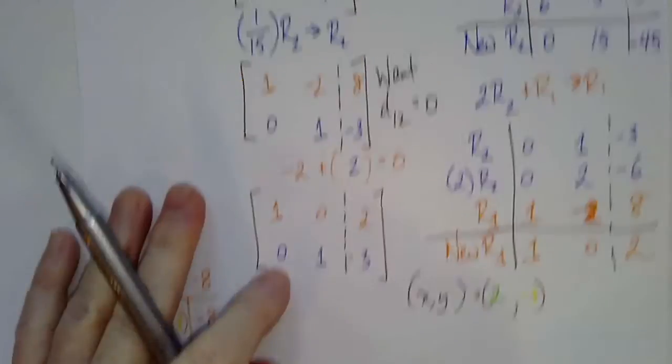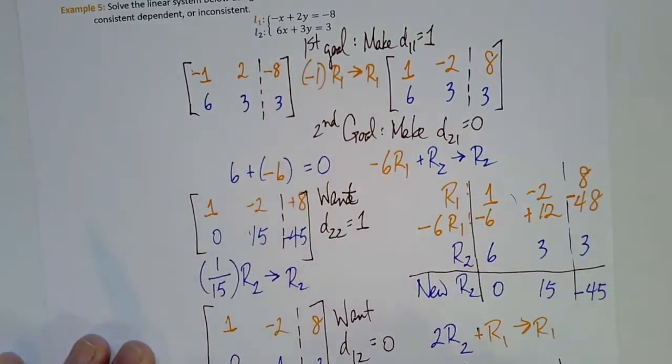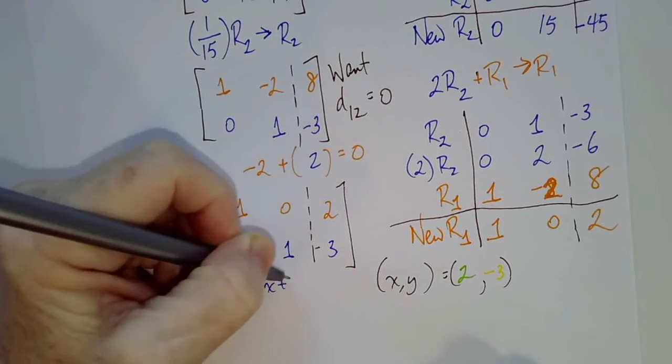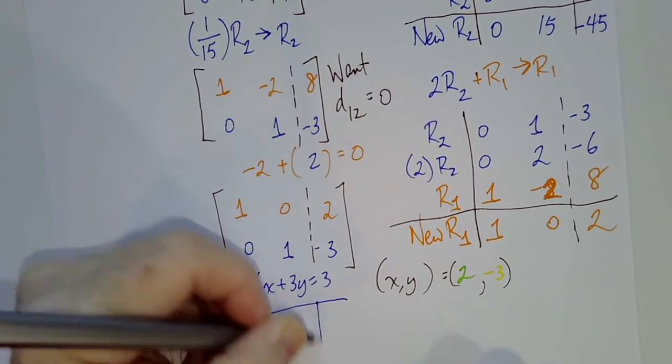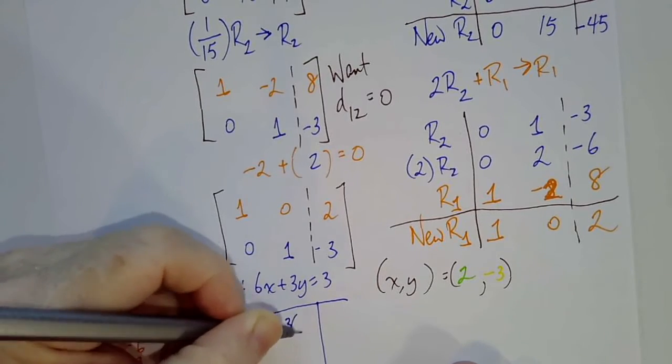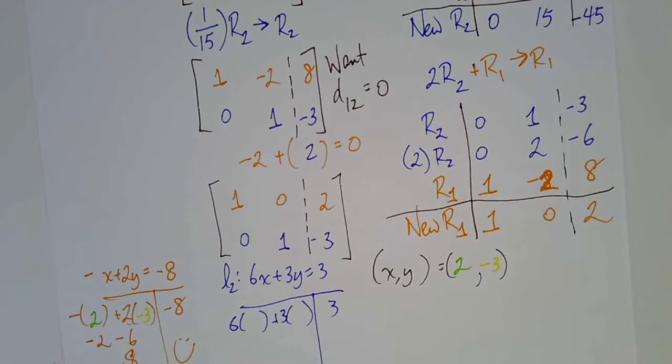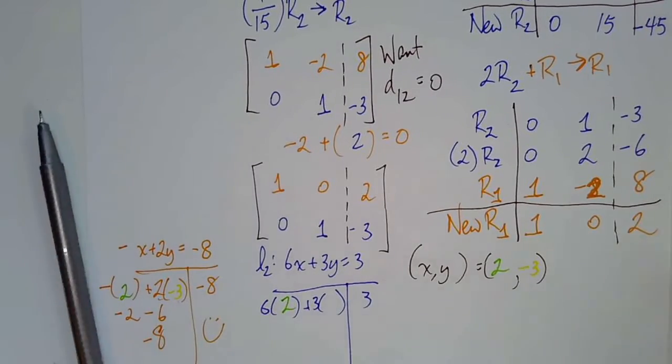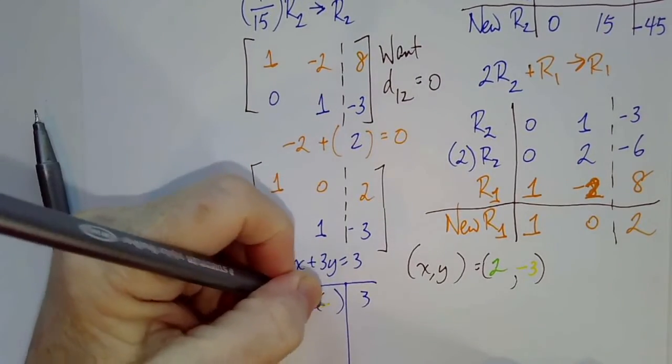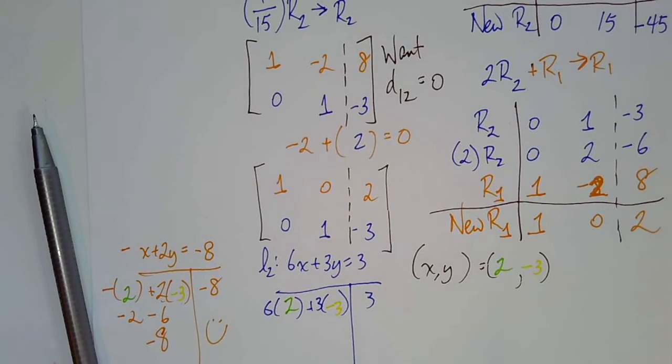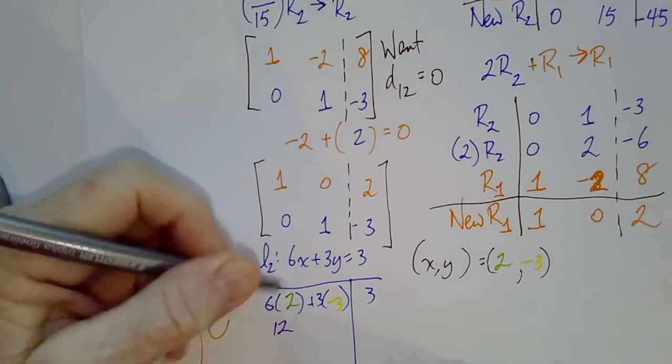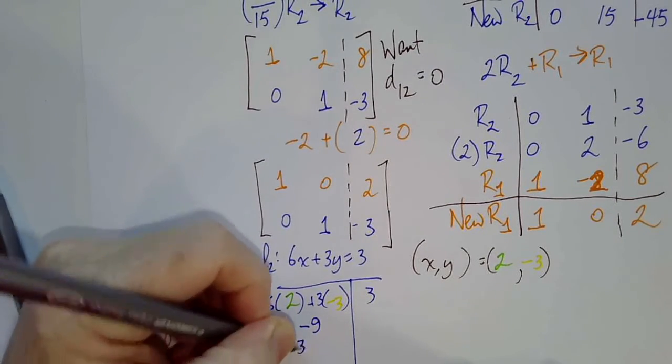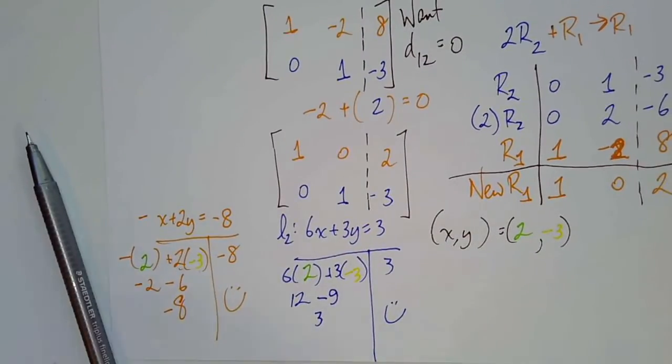Equation 2 was 6x plus 3y equals 3. And again we are going to substitute in the values of 2 and negative 3. 6 times 2 is 12, 3 times negative 3 is negative 9, and 12 minus 9 is 3. Oh that's lovely.